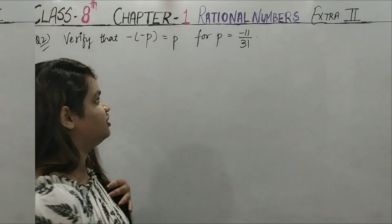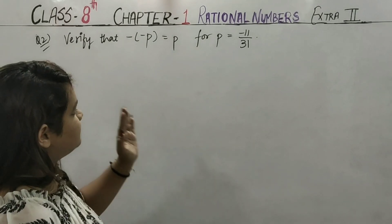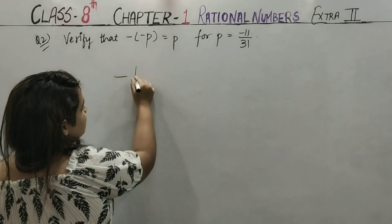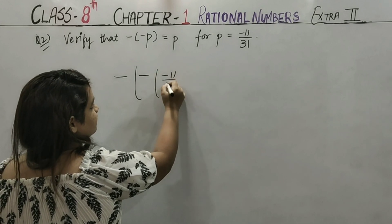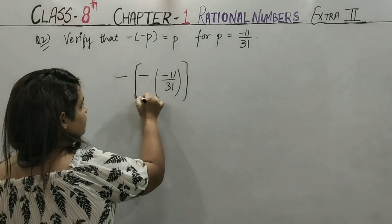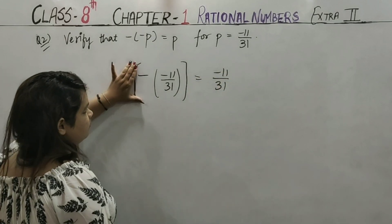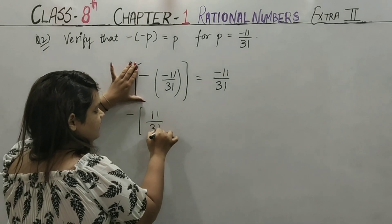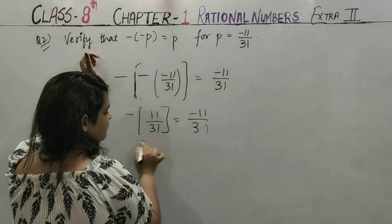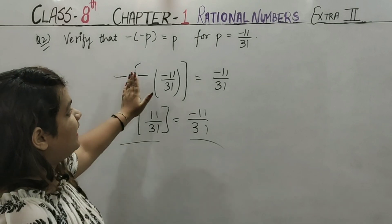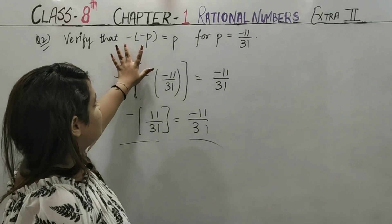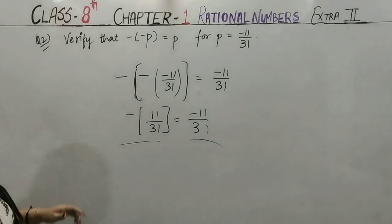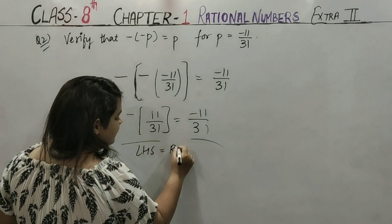Simple answer is 1/2. Next, verify that −(−p) = p. The value of p given is −11/31. We have to put the value of −p into −(−p). The outer minus and inner minus cancel to give +11/31. On the other side we have −(−11/31) = 11/31. So yes, this verifies that negative of negative p equals p, because minus-minus cancels. LHS is equal to RHS, hence verified.